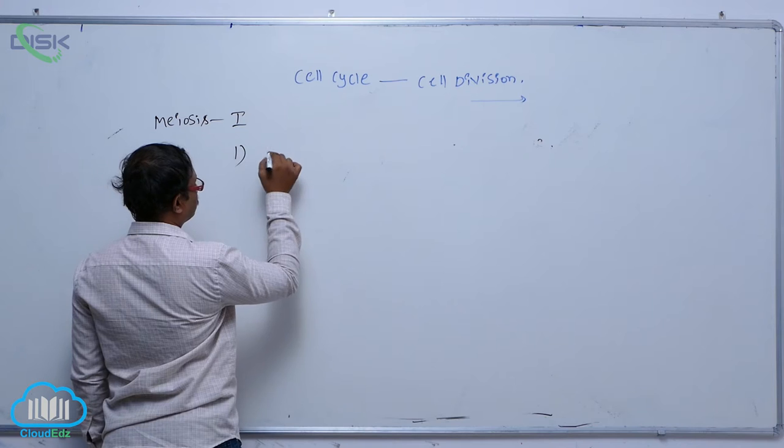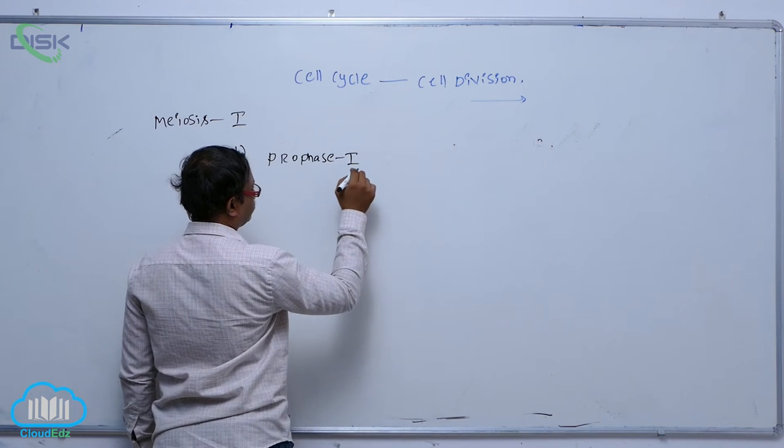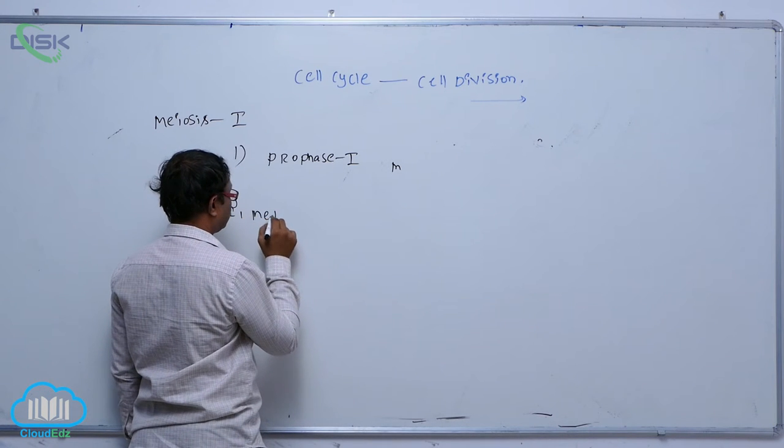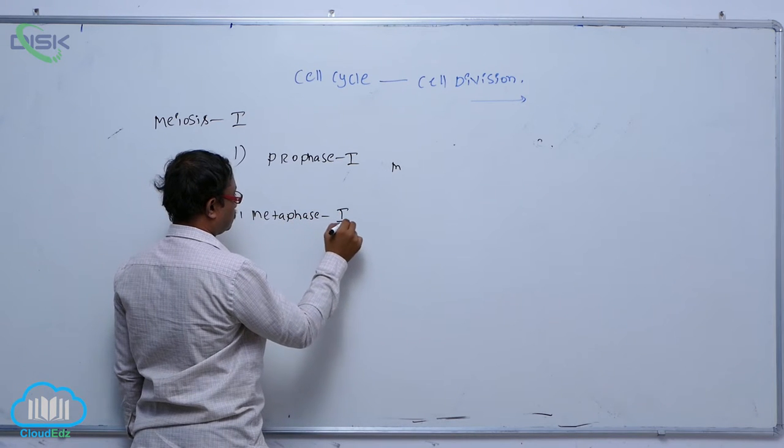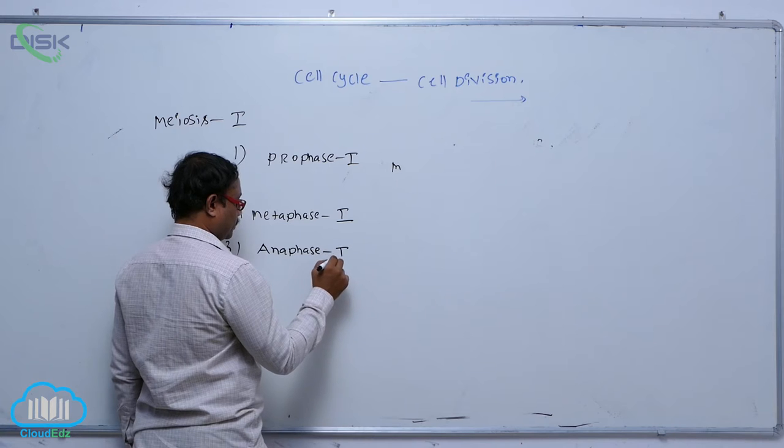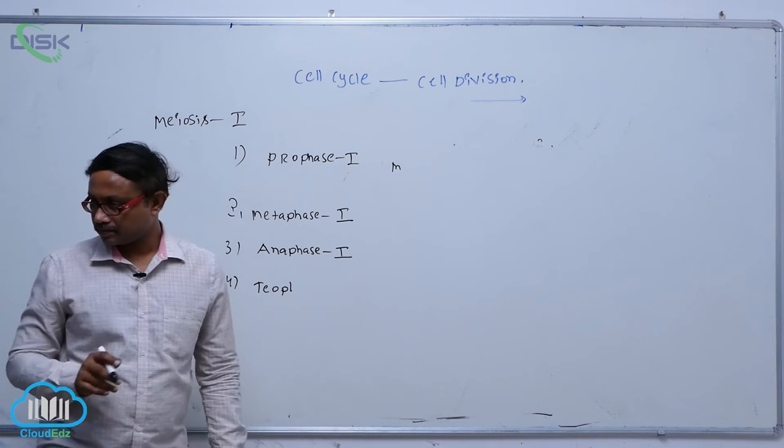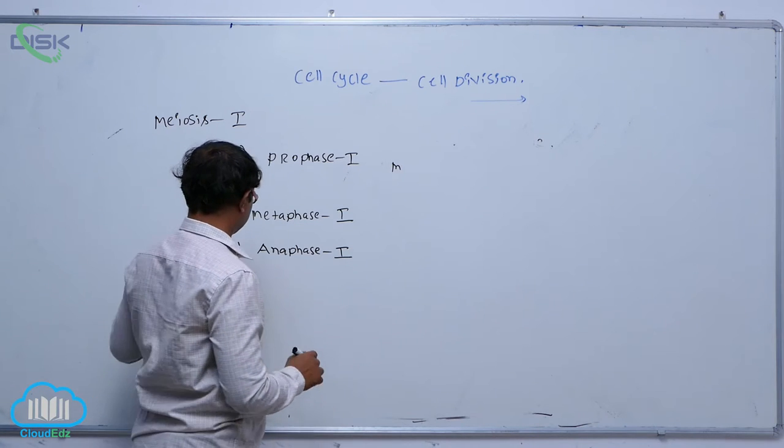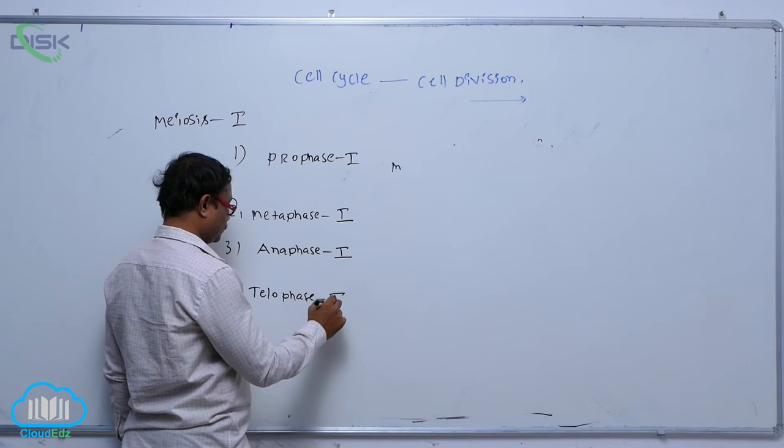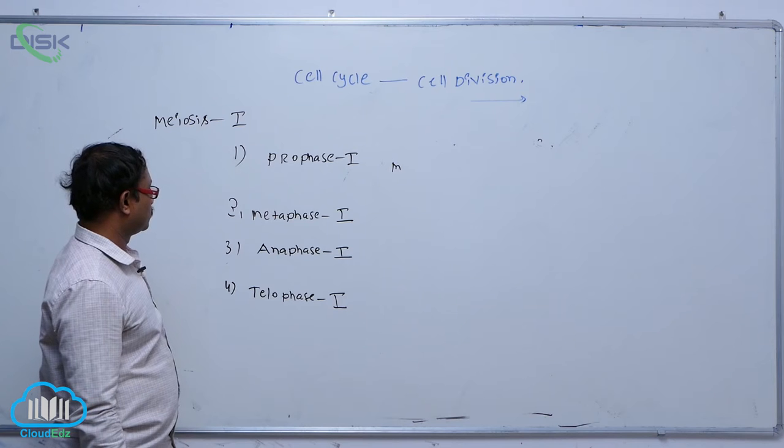In meiosis I, there are generally five sub-phases: prophase one, metaphase one, anaphase one, and telophase one. Prophase one, metaphase one, anaphase one, and telophase one.